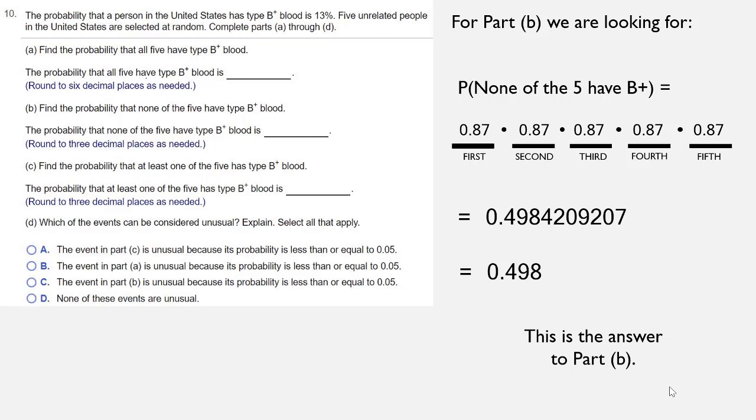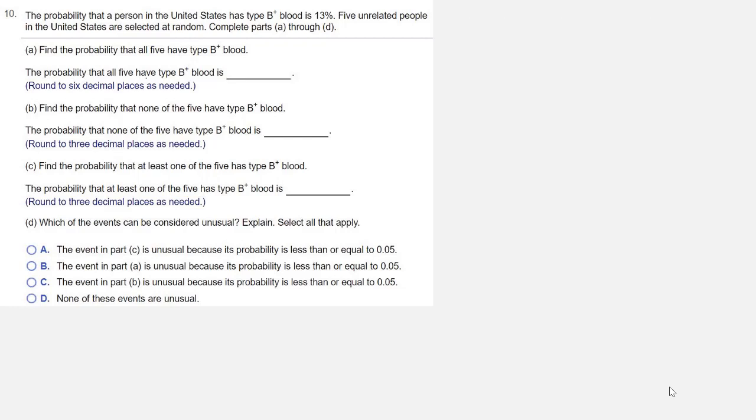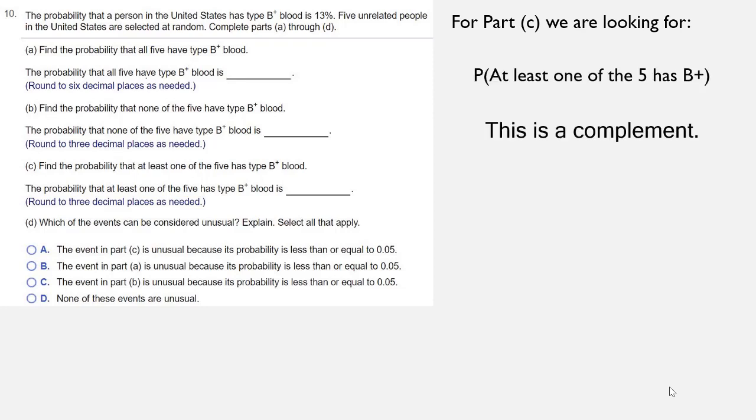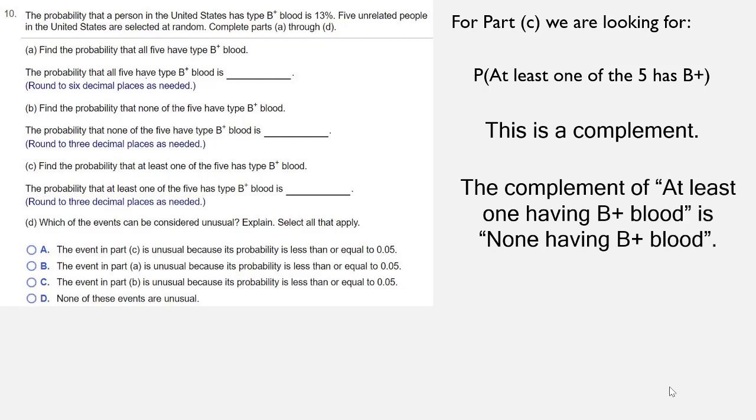In part C, we're looking for the probability that at least one has type B positive blood. Now this is a complement. When you look at at least one, that's the complement of none.